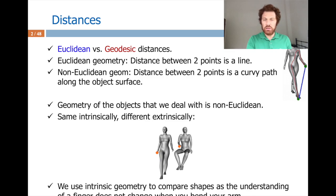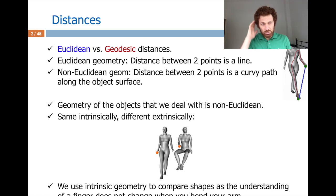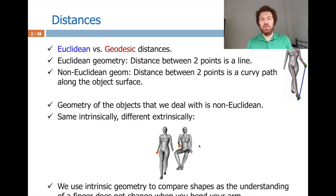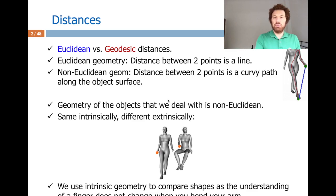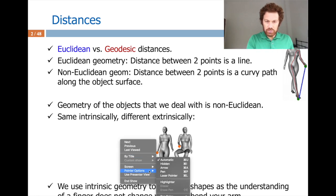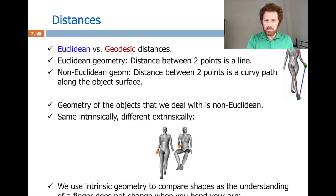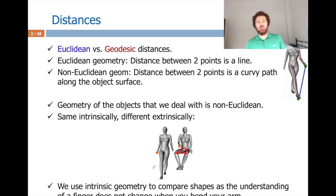The traditional Euclidean distance, which is a straight line between two points, is not going to be useful when comparing shapes that are intrinsically the same but extrinsically different — like these two models here, which are from the same family. To factor out posture differences, we will use something called geodesic distances that run through the surface. The geodesic distance goes through the surface and, importantly, it doesn't change when the pose changes.